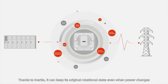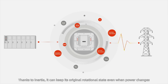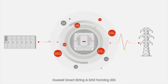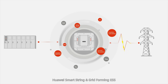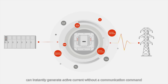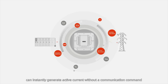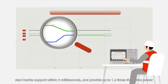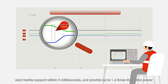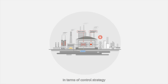Thanks to inertia, it can keep its original rotational state even when power changes. Huawei SmartString GridForming ESS can instantly generate active current without a communication command, starting inertia support within 5 milliseconds and providing up to 1.2 times the active power.